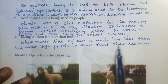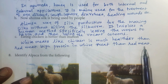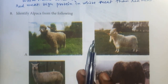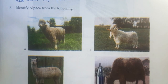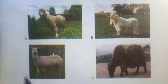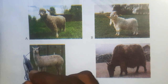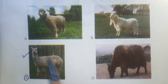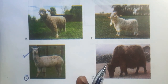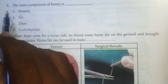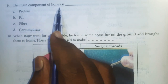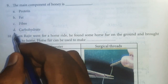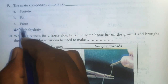Eighth one: Identify alpaca from the following. See this diagram — this picture shows the image of alpaca. Ninth one: The main component of honey is carbohydrate. Option D is the right answer.